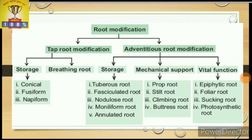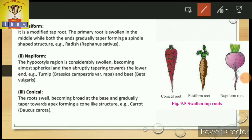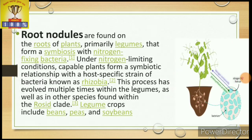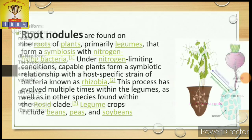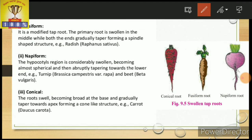Now we will see these modifications one by one. First, we focus on storage. For storage, you can see the modification with three images or three photos showing three types: the conical root, the fusiform root, and the napiform root. First, we focus on the fusiform root.